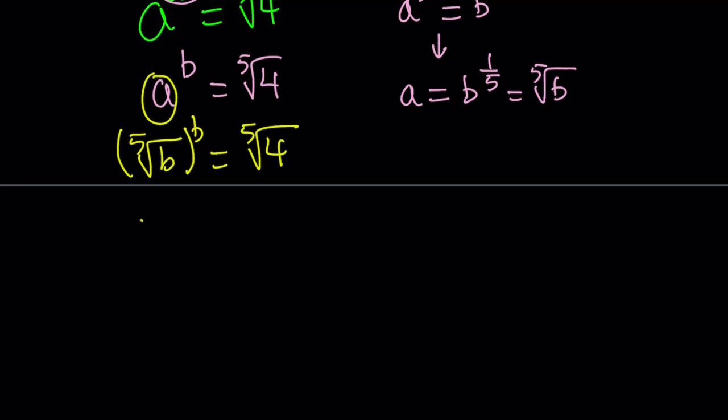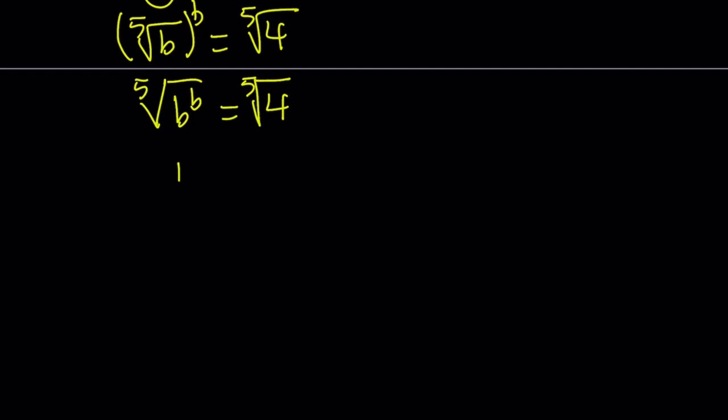We can put the b inside, so write this as the fifth root of b to the power b equals the fifth root of 4. Since both sides have the fifth root, we can raise both sides to the fifth power. From here, we get b to the power b equals 4. And at this point, it's very easy to guess that b equals 2, because 2 to the second power equals 4.